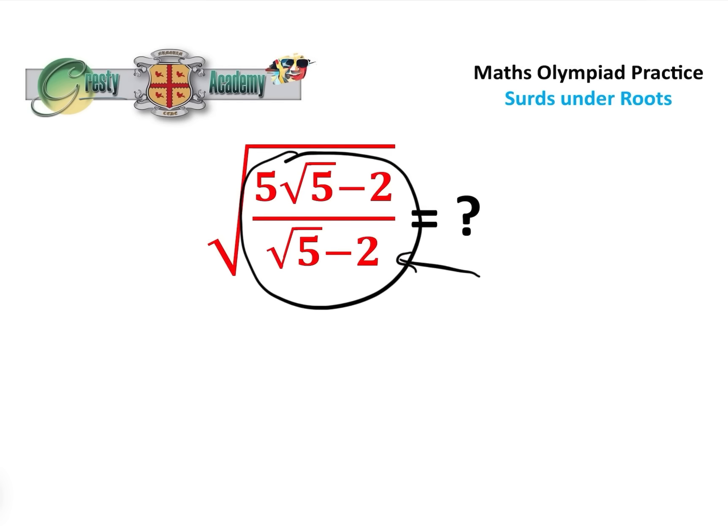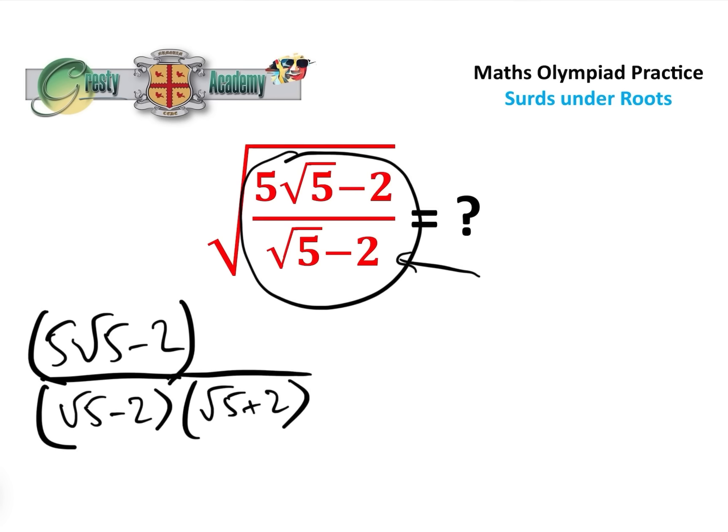The first thing we want to do clearly is we want to multiply by the conjugate. So let's have a look: 5√5 minus 2 over √5 minus 2 times by the conjugate √5 plus 2 over √5 plus 2. Let's see if that simplifies it.